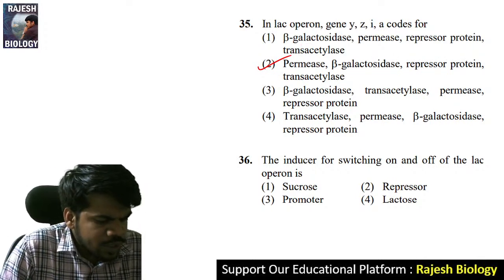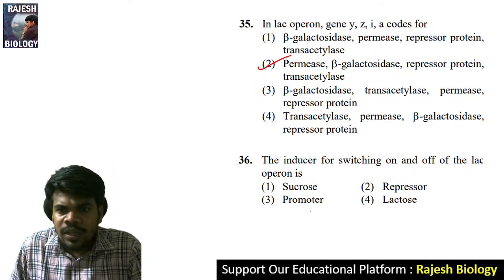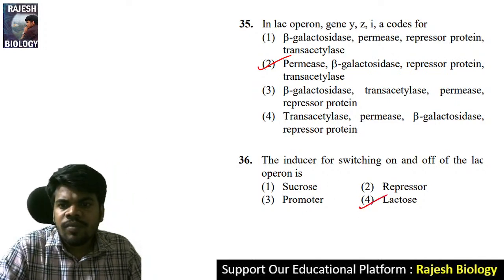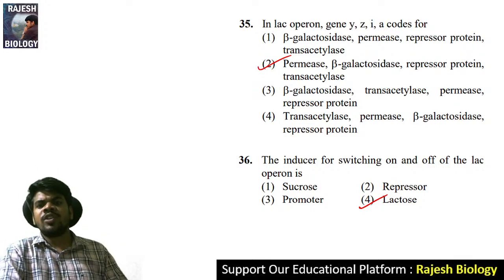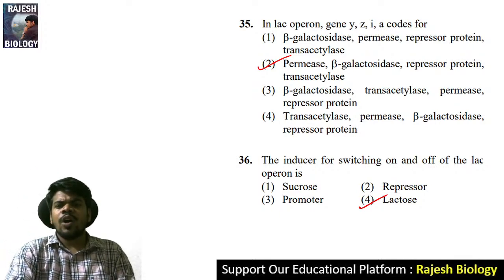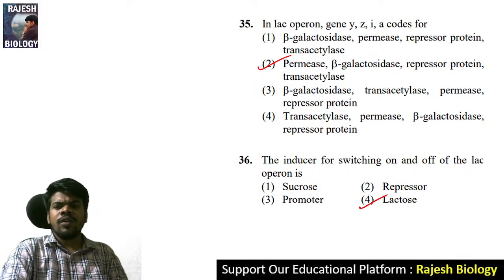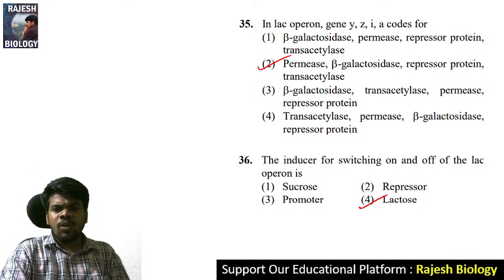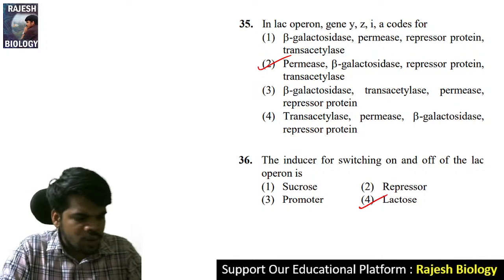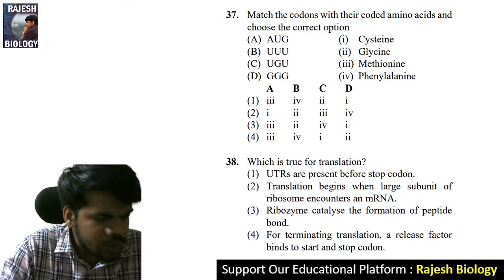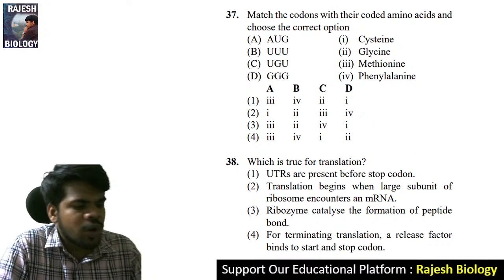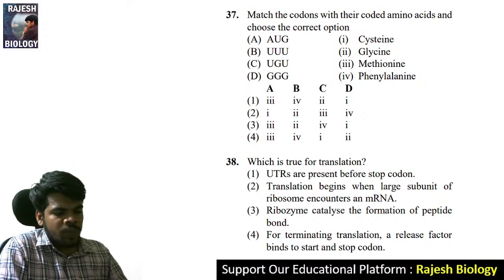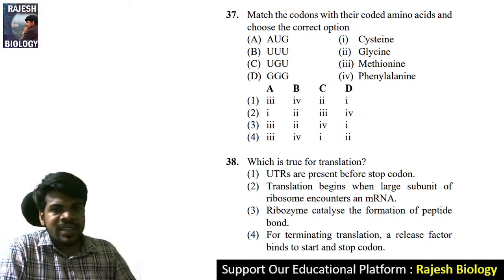Question 36: the inducer for switching on and off the lac operon is lactose. Jnaneshwari says the right answer — lactose. The inducer for switching on and off of the lac operon is lactose. Perfect, Jnaneshwari. You are well prepared from this important topic, lac operon.